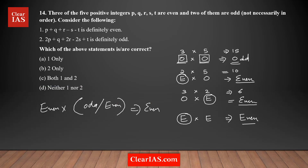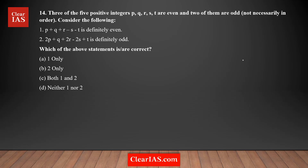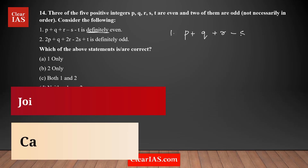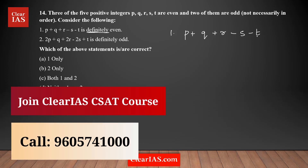These are the rules we'll apply to the question. Statement one says that P + Q + R − S − T is definitely even, meaning in all cases the result is even. We need to analyze whether that's true.